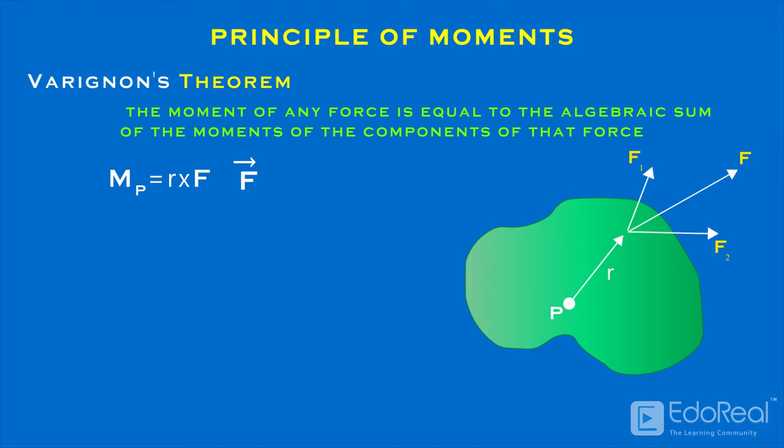But F is the vector sum of F1 and F2. So we can write moment of force about point P as follows.